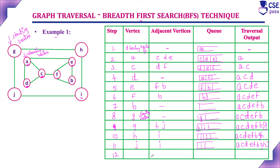Only one vertex remains — I. We visit I; there is no adjacent unvisited vertex and the queue is now empty. The complete traversal output is A, C, D, E, F, B, G, H, J, I. We have now visited all vertices in the given graph and BFS traversal is complete.